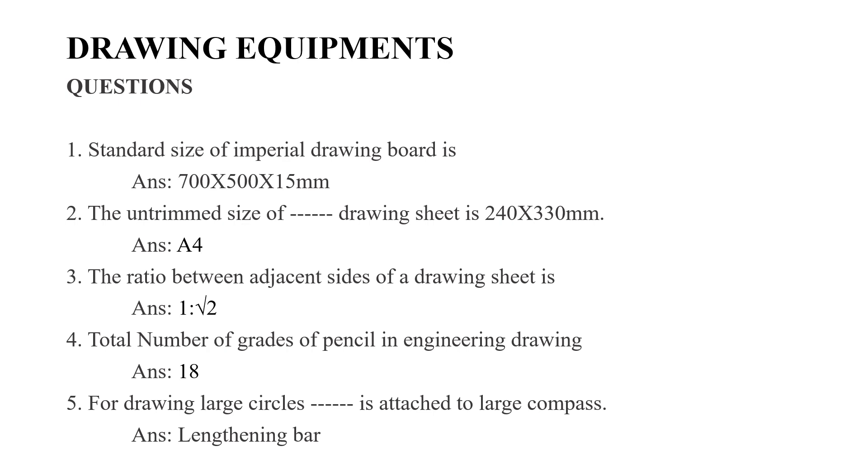First question: Standard size of imperial drawing board is 700 by 500 by 15mm. Second question: The untrimmed size of drawing sheet is 240 by 330mm. That's A4, and trimmed size is 297 by 210.